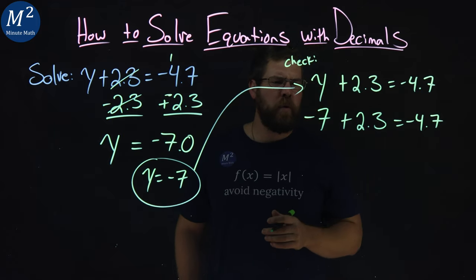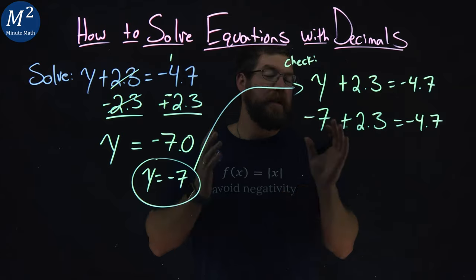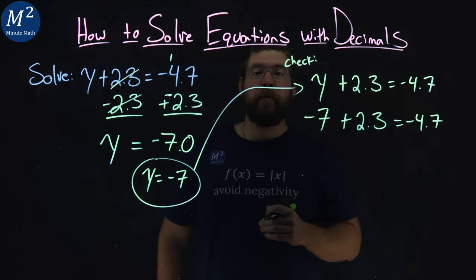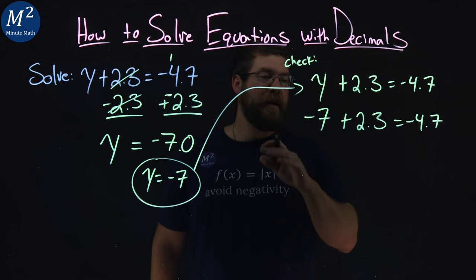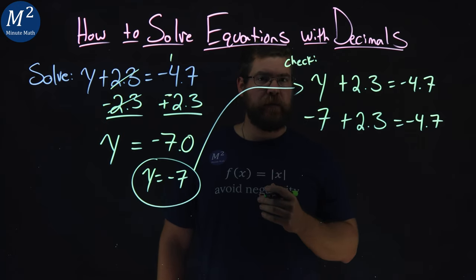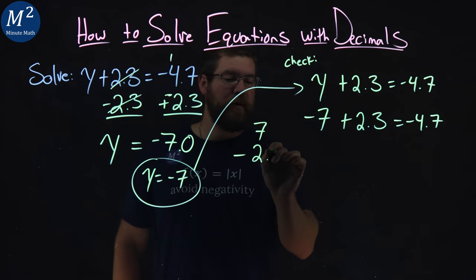Now, if you remember from before, we have a negative plus a positive, we're going to be subtracting them. We need to find the difference between 7 and 2.3. And identify that 7 is going to be more negative, so my answer should be negative. So what I'm going to do is, I'm going to take my 7, and I'm going to subtract 2.3 from it.